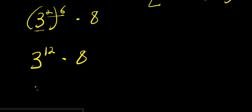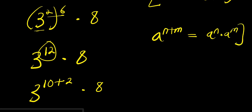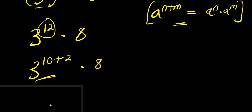We can express 12 as the sum of ten and two, so we have three to the power ten plus two, times eight. Applying the identity a to the power n plus m equals a to the power n times a to the power m, we get three to the power ten, times three to the power two, times eight.